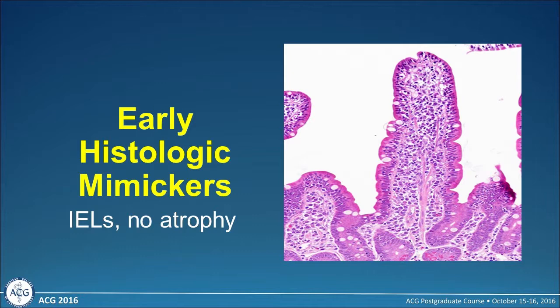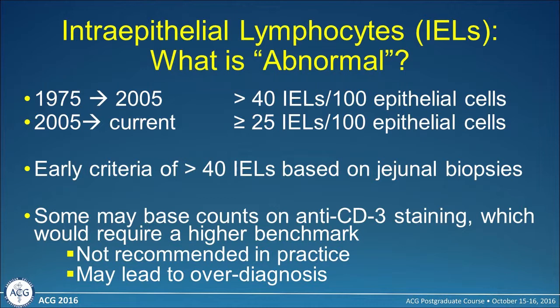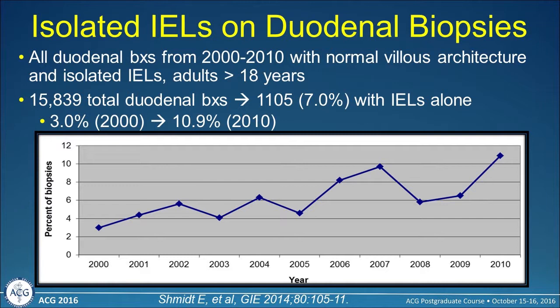Let's start with folks who have intraepithelial lymphocytes without atrophy. It helps to define what normal intraepithelial lymphocyte counts are. Up until 2005, that number used to be greater than 40 IELs per 100 epithelial cells. After that, the criteria changed to greater than or equal to 25 IELs per 100 cells. Earlier criteria were based on jejunal biopsies, and some studies used anti-CD3 staining, which may lead to higher lymphocyte counts and is not recommended in practice because it may lead to over-diagnosis.